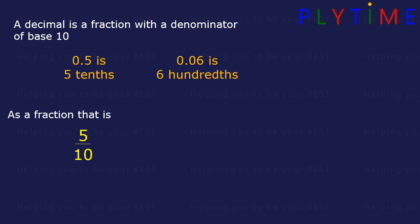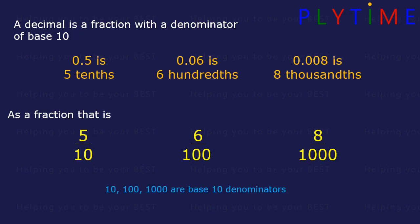0.06 is 6 hundredths. As a fraction, that's 6 divided by 100. And 0.008 is 8 thousandths. As a fraction, that's 8 over 1,000. 10, 100 and 1,000 are base 10 denominators.